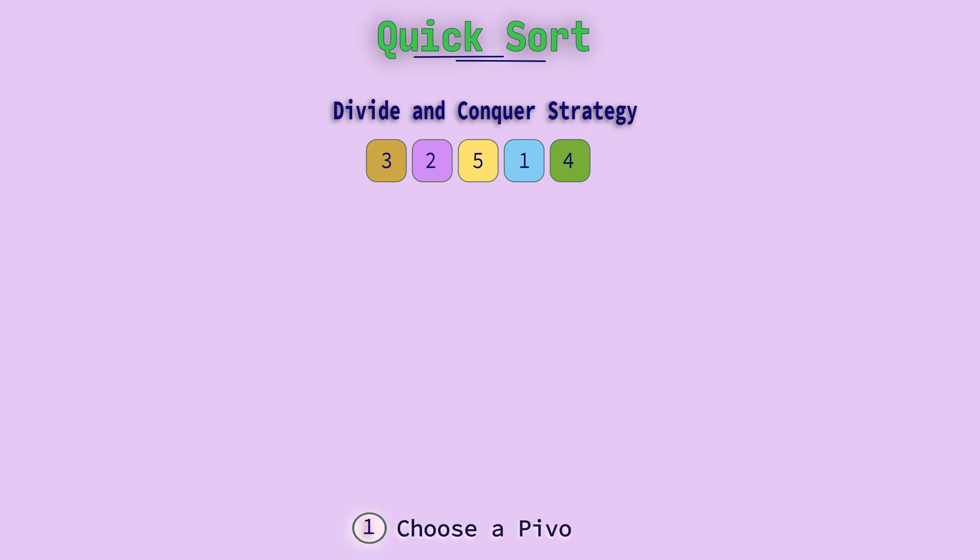To divide the array first, choose a pivot element from the given array and then make a partition around the pivot element on the array. Remember you can choose the pivot element anywhere from the array, that is at the start, at the end, or in the middle. There is no restriction for that.